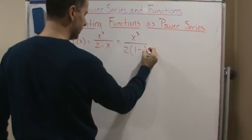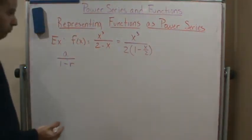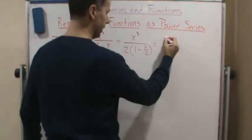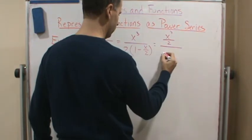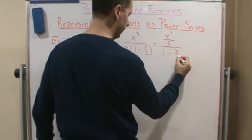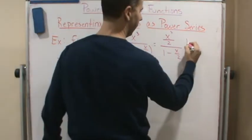And now I'm going to divide the top and the bottom by 2. And so I get x cubed over 2 over 1 minus x over 2. So now my r, right, r equals x over 2.